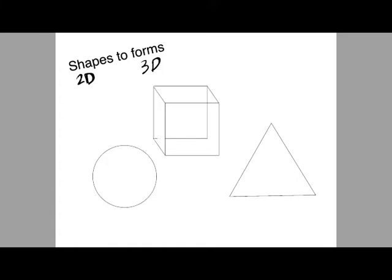The main three, being circle, square, and triangle, become a cone, a sphere, and a cube.